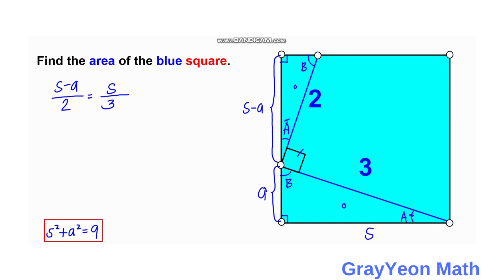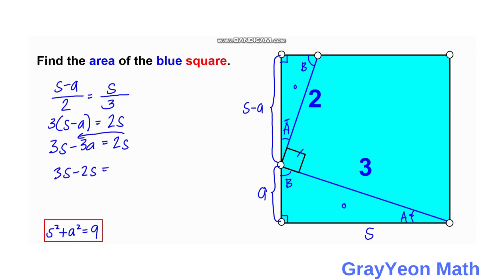We cross-multiply, so we have 3 times (S minus A) is equal to 2S. So 3S minus 3A equals 2S. Putting 2S on the left-hand side, we have 3S minus 2S equals 3A, and therefore S equals 3A.